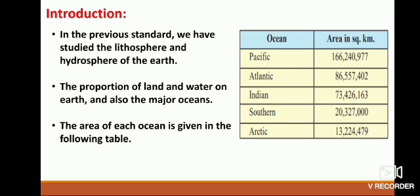The table has two columns: ocean and area in square kilometers. Pacific Ocean: 16 crore 62 lakh 40,977 square kilometers. Atlantic Ocean: 8 crore 65 lakh 57 thousand 402 square kilometers. Indian Ocean: 7 crore 34 lakh 26 thousand 163 square kilometers. Southern Ocean: 2 crore 3 lakh 27 thousand square kilometers. Arctic Ocean: 1 crore 32 lakh 24 thousand 479 square kilometers.